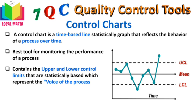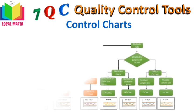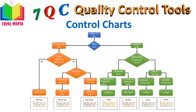Control charts allow you to identify the following conditions: the stability of a process, the predictability of a process, identification of common causes of variation, and special conditions that can be monitored. Control charts are broadly classified into two categories depending on the type of data you have.